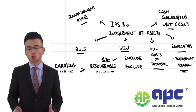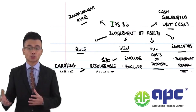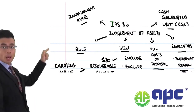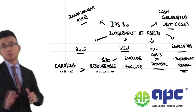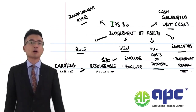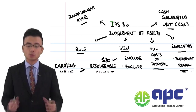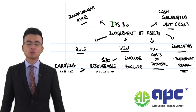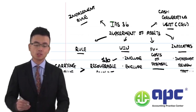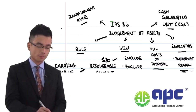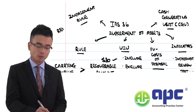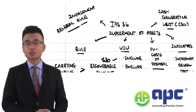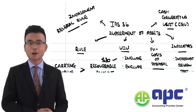In this section we've covered the impairment rule, value in use, fair value less cost of disposal, and impairment indicators. In the next section we'll be talking about the cash generating unit (CGU) and also the impairment reversal rules. I look forward to seeing you in the next video.